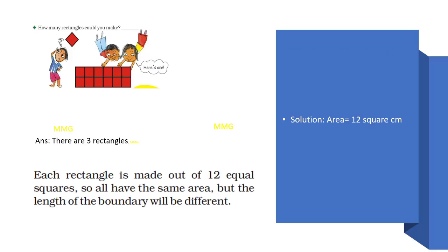How many rectangles could you make? The answer is 3 rectangles. The area of each rectangle will be 12 square centimeters. Each rectangle is made out of 12 equal squares, so all have the same area. But the length of the boundary will be different for each rectangle.